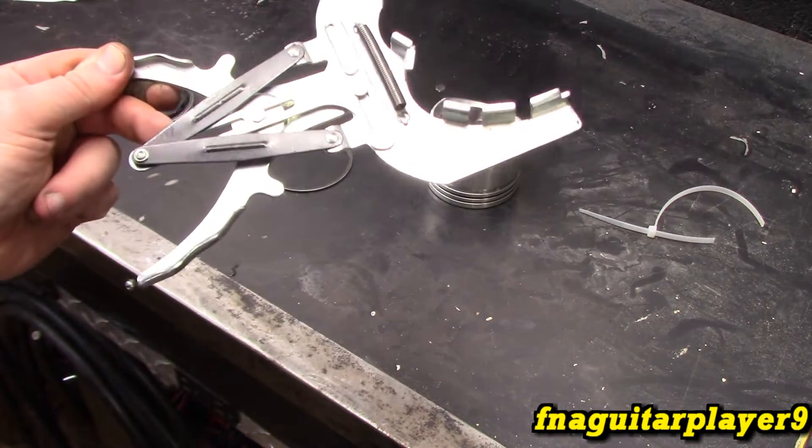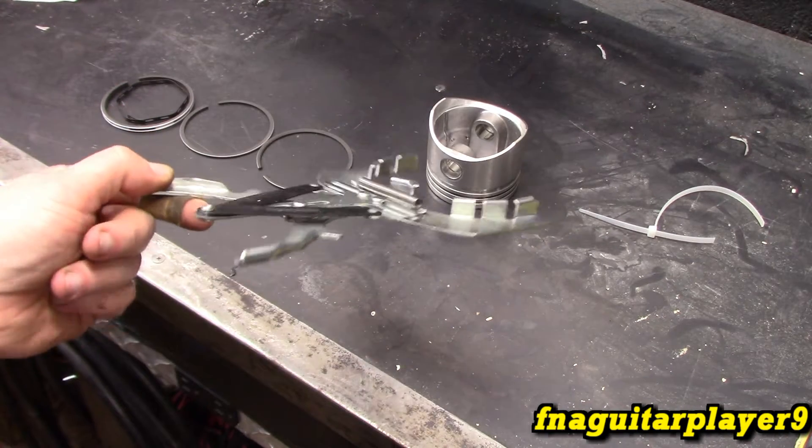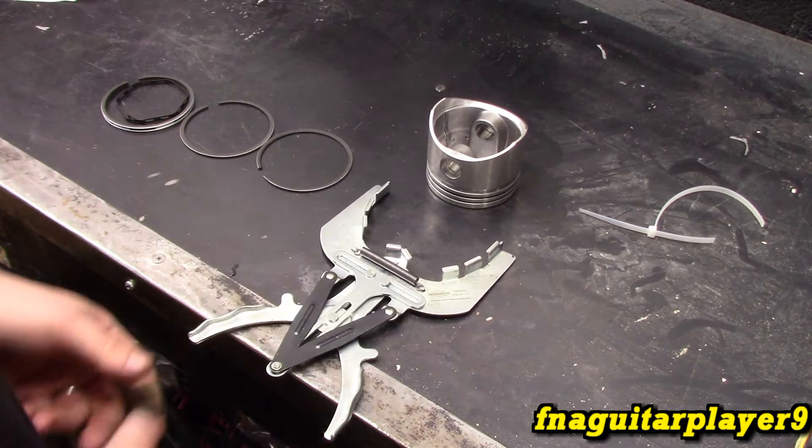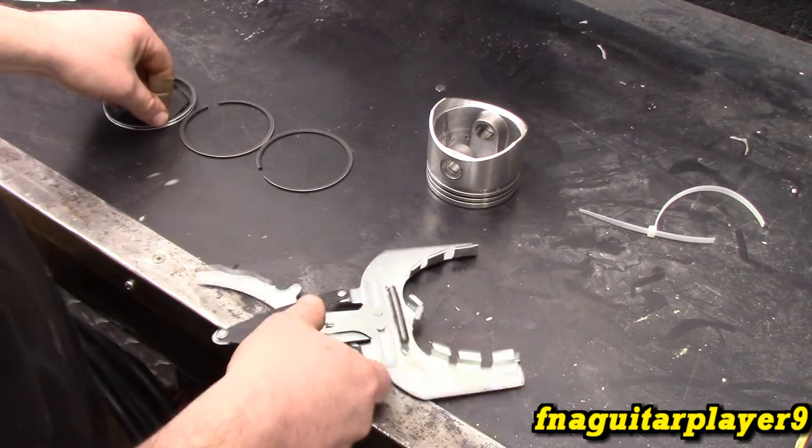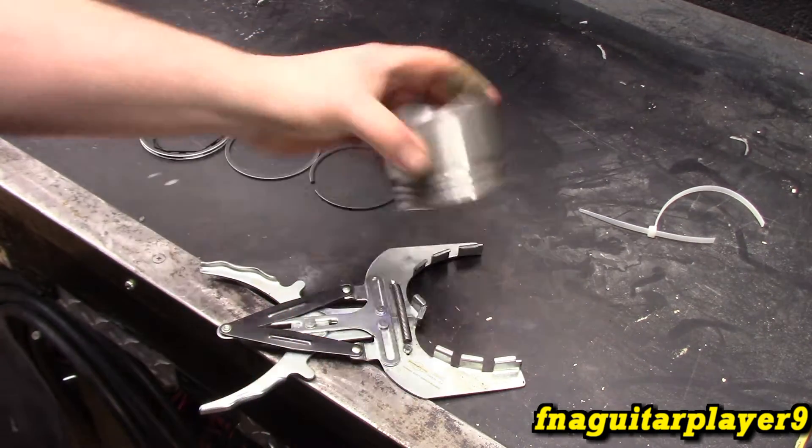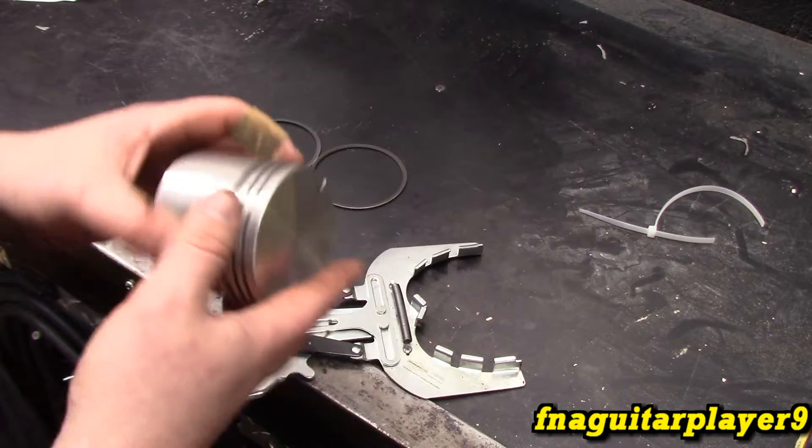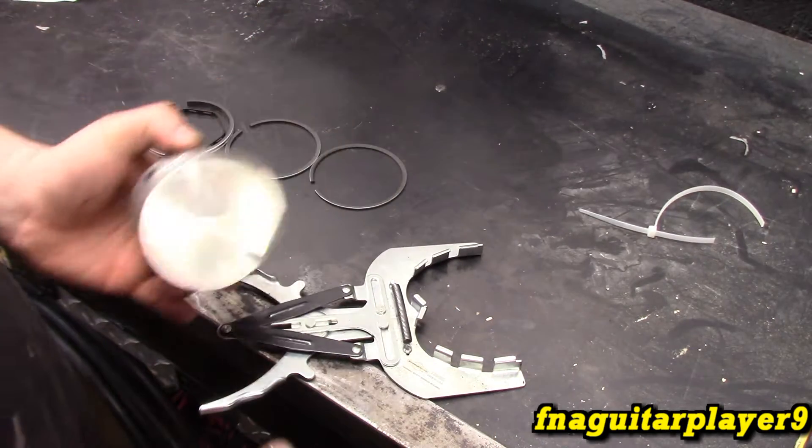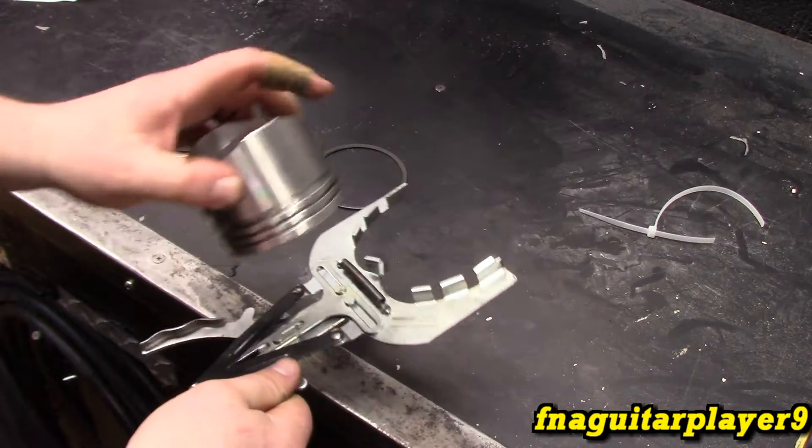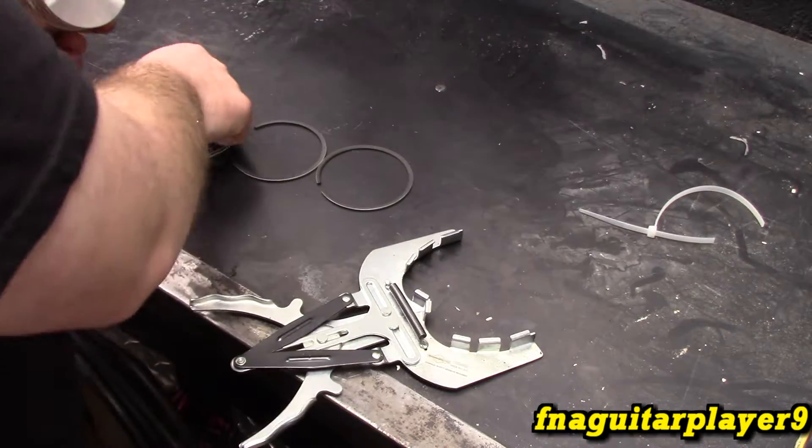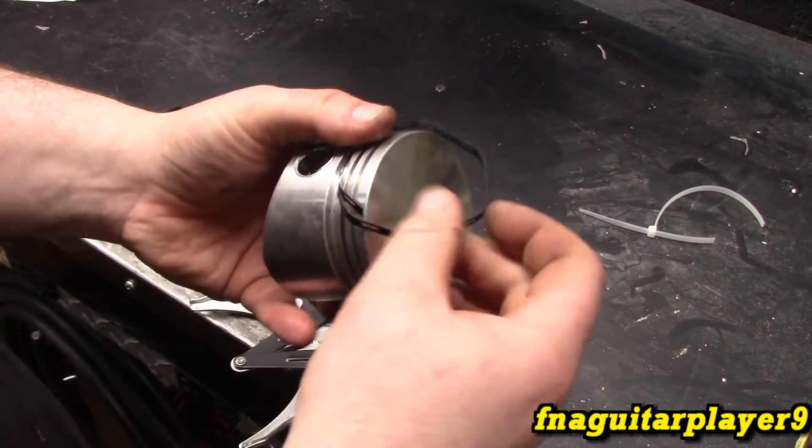I bought this probably two years ago and just started using it about two months ago. I want to install all three of these piston rings. This is an 8 horsepower Briggs piston. This is the same for automotive and everything else too, this just happens to be what size this one's for.